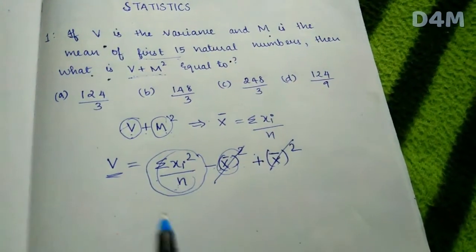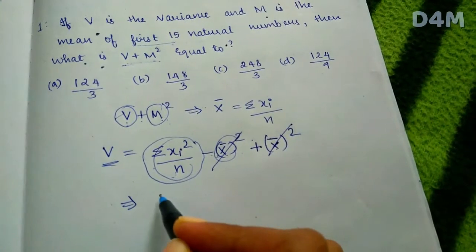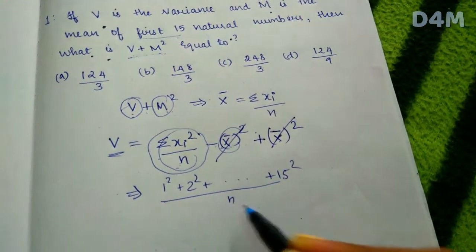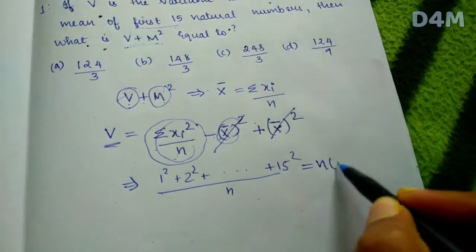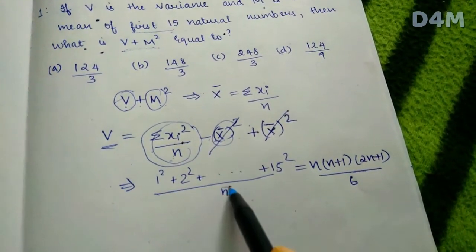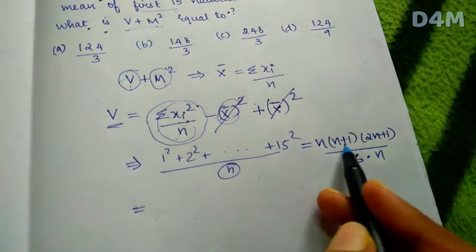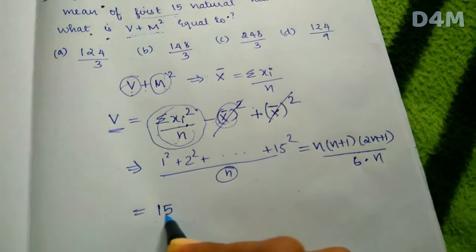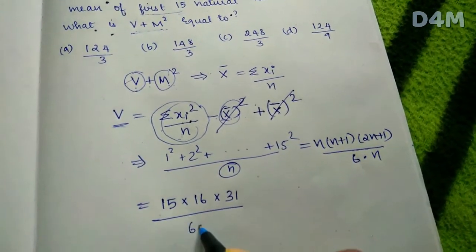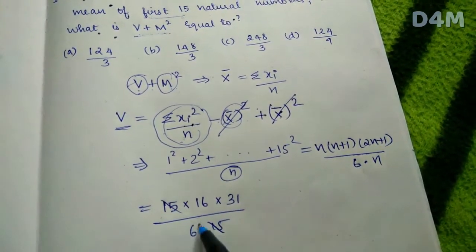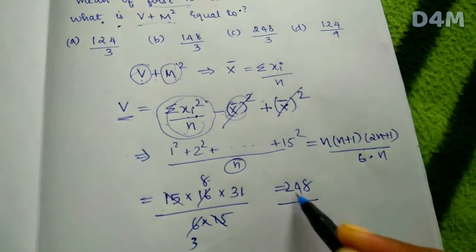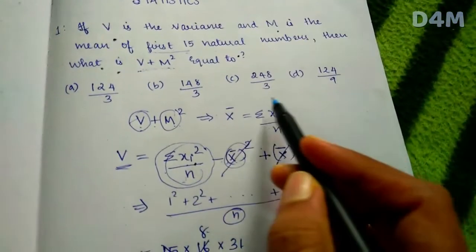The summation x_i squared for first 15 natural numbers uses the formula N(N+1)(2N+1)/6. With N=15: 15 × 16 × 31 divided by 6 × 15. After cancellation, 6 and 16 give 8, and further cancellation gives 248/3. This is option C.